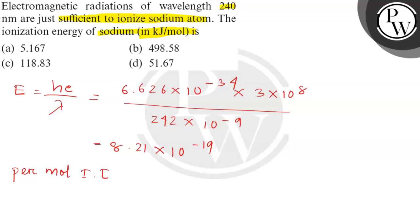Per mole ionization energy will be 8.21 into 10 to the power minus 19 times Avogadro's number, that is 6.023 into 10 to the power 23.